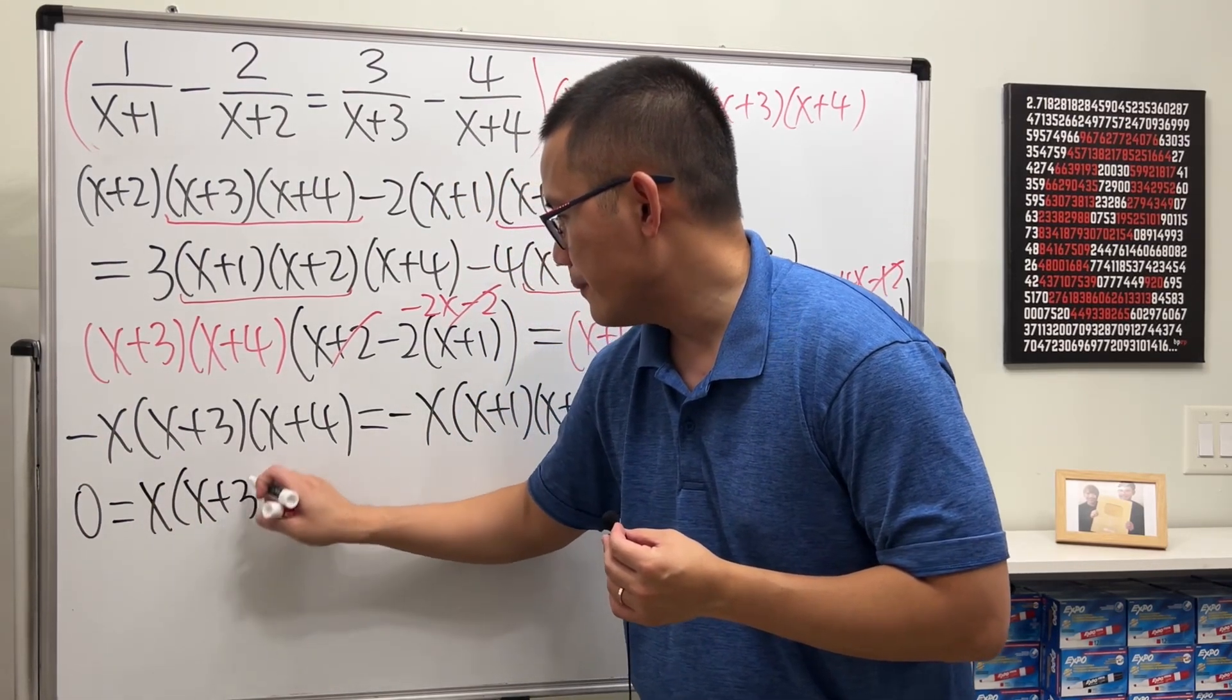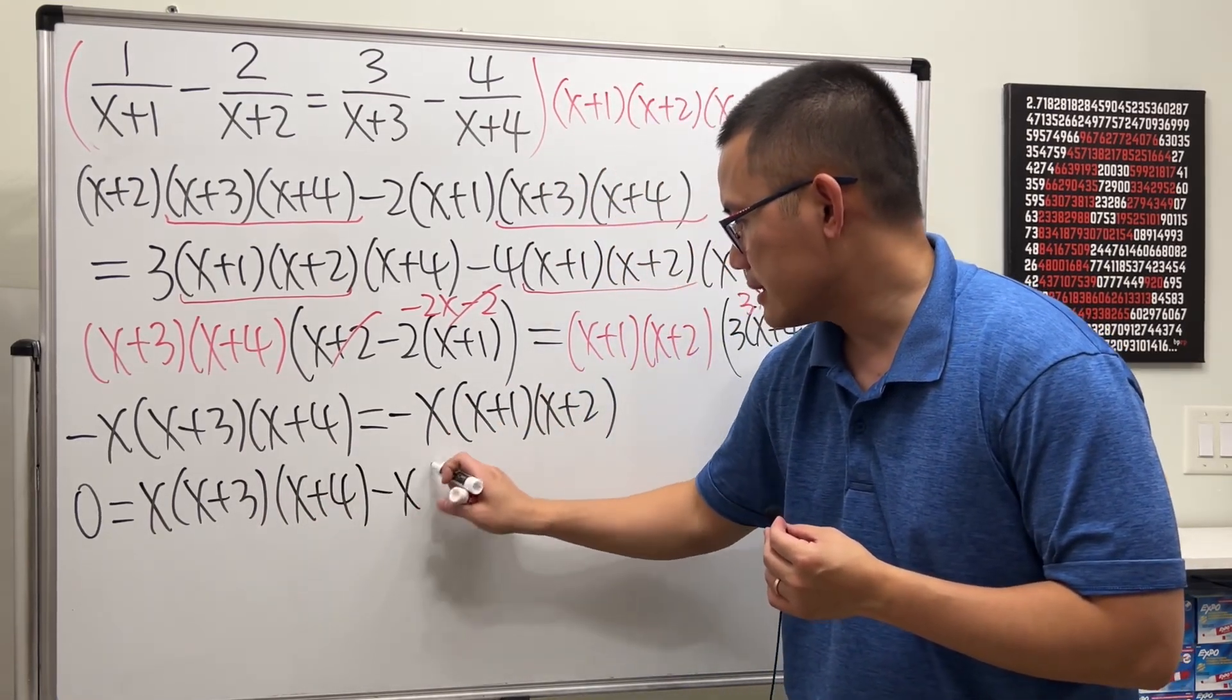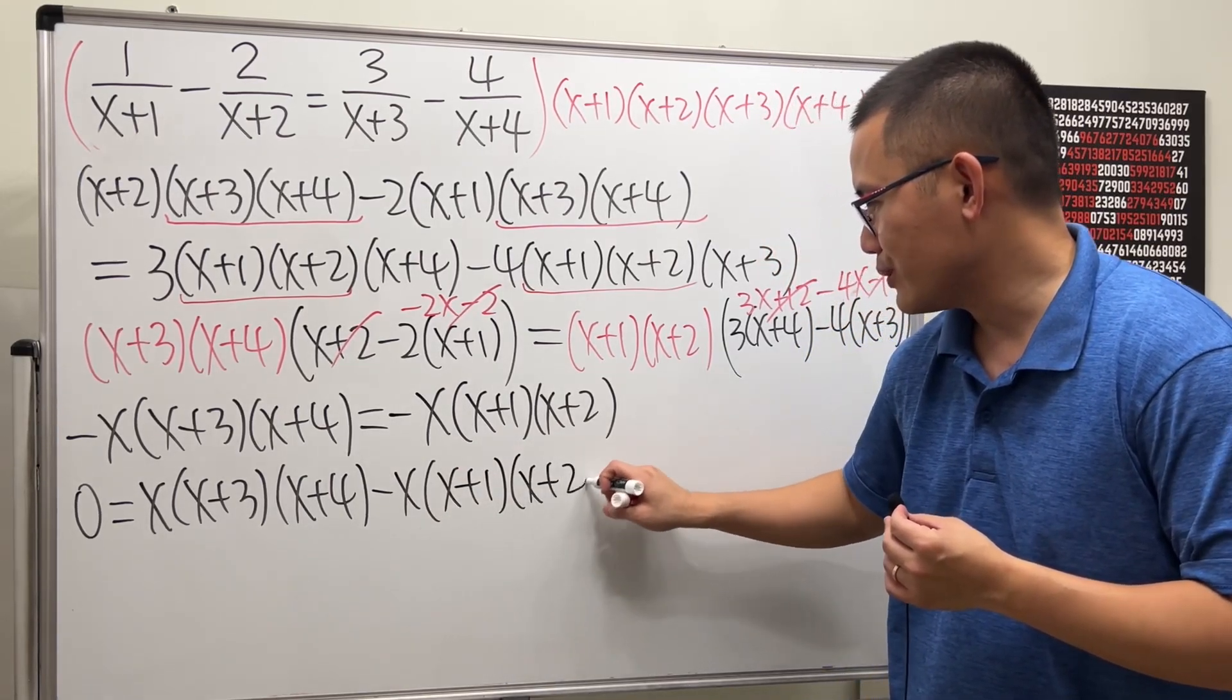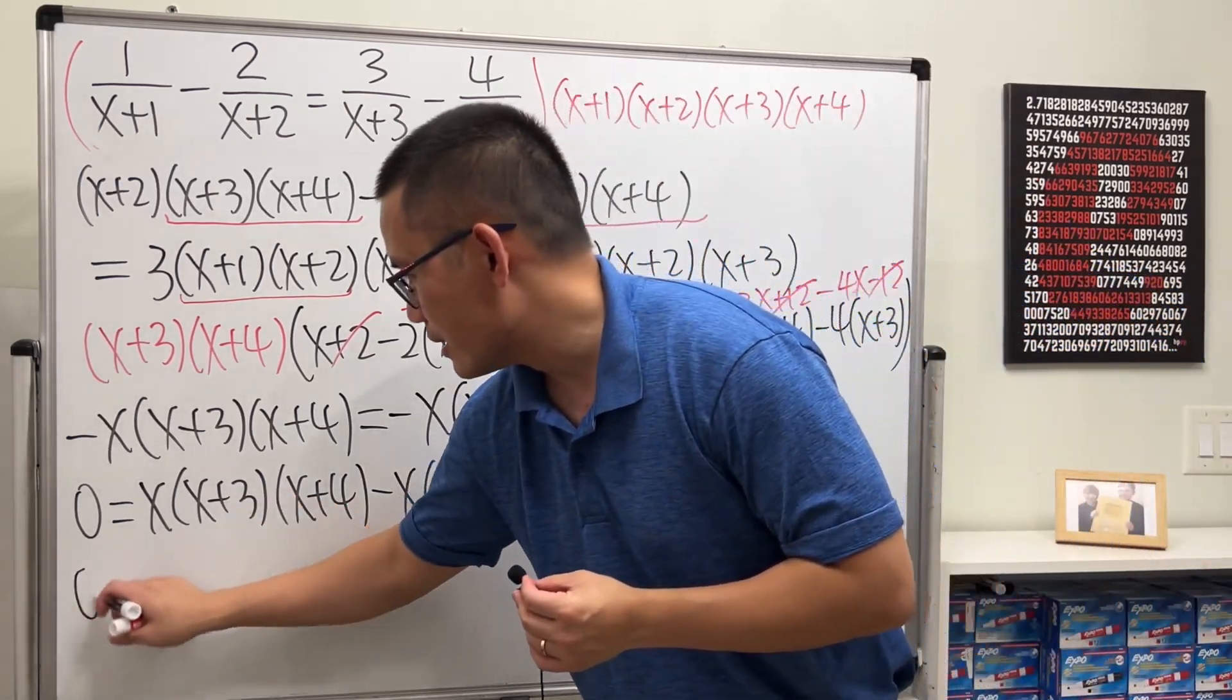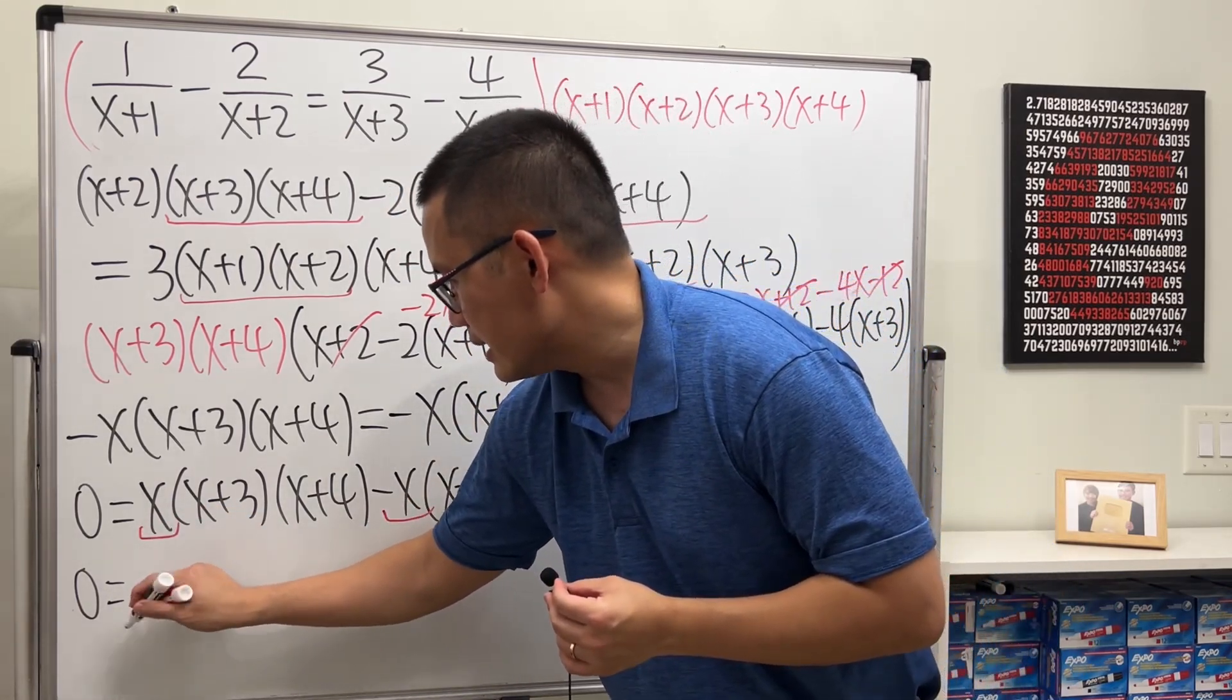x plus 3, x plus 4, and then minus x, and then x plus 1, x plus 2. And then, I'm going to factor out the x from here and here. So we get x on the outside.